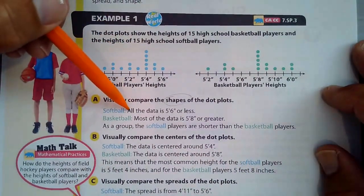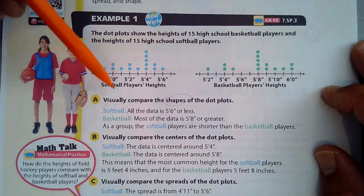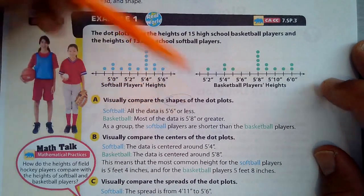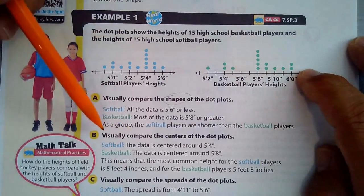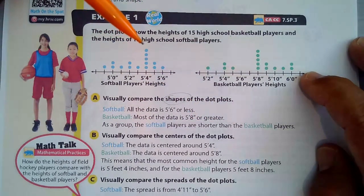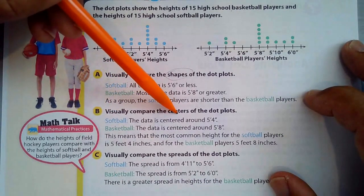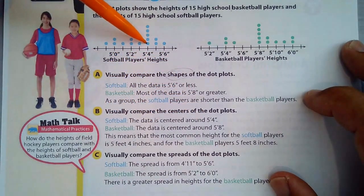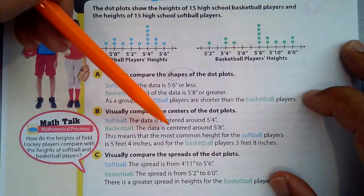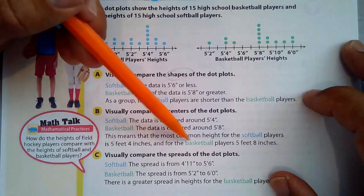When we're looking for shape, we're thinking about, well, all the data for softball is 5'6 or less. Basketball, most of the data is 5'8 and greater. As a group, the softball players are shorter than the basketball players. So that's the shape of the dot plots that help tell us that. Visually compare the centers. The data is centered around 5'4 for softball and 5'8 for basketball. This means the most common height for softball players is 5'4 and for basketball players, 5'8.